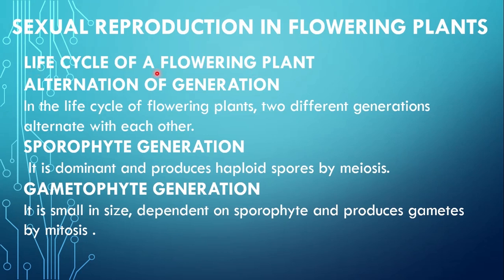Next dekhte hain life cycle of a flowering plant. Life cycle ko detail mein discuss karne se pehle ek bahut important term ko study karenge, that is alternation of generation. In the life cycle of flowering plants, two different generations alternate with each other. One is the sporophyte generation and second is the gametophyte generation. Sporophyte generation means the spore producing generation and gametophyte generation means the gamete producing generation.